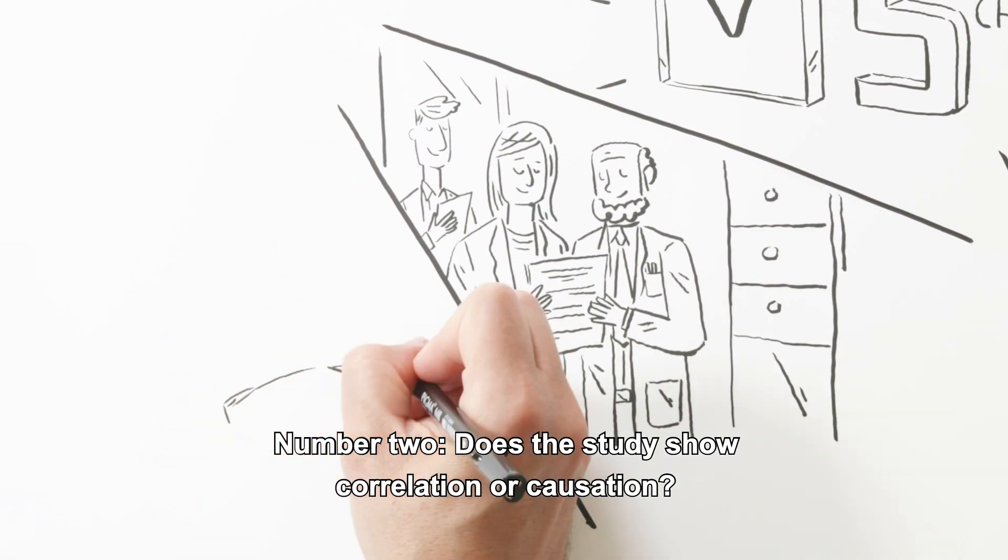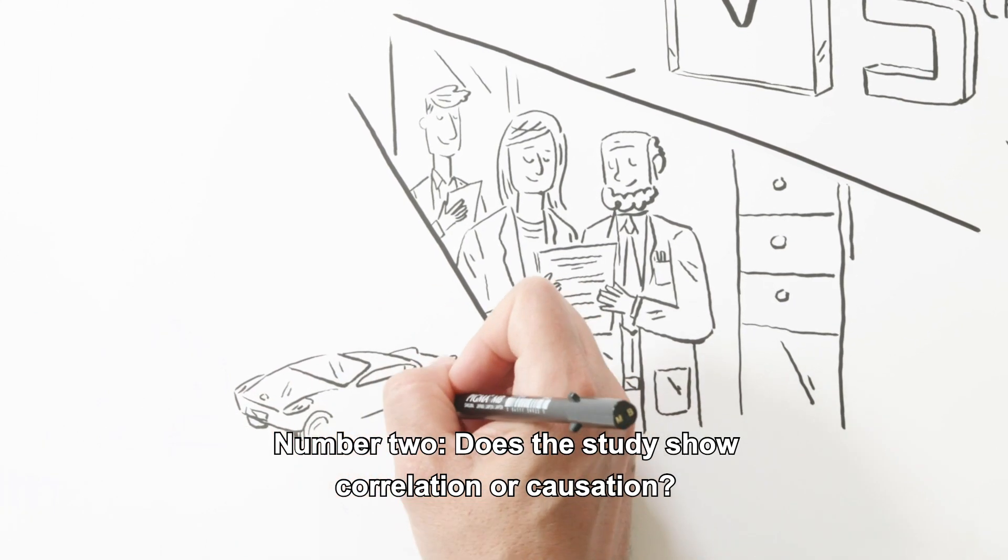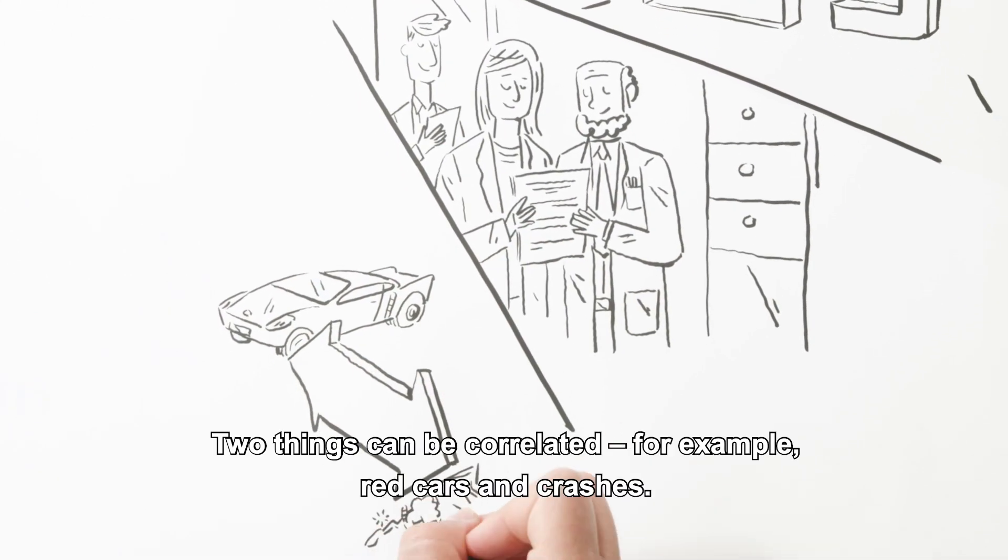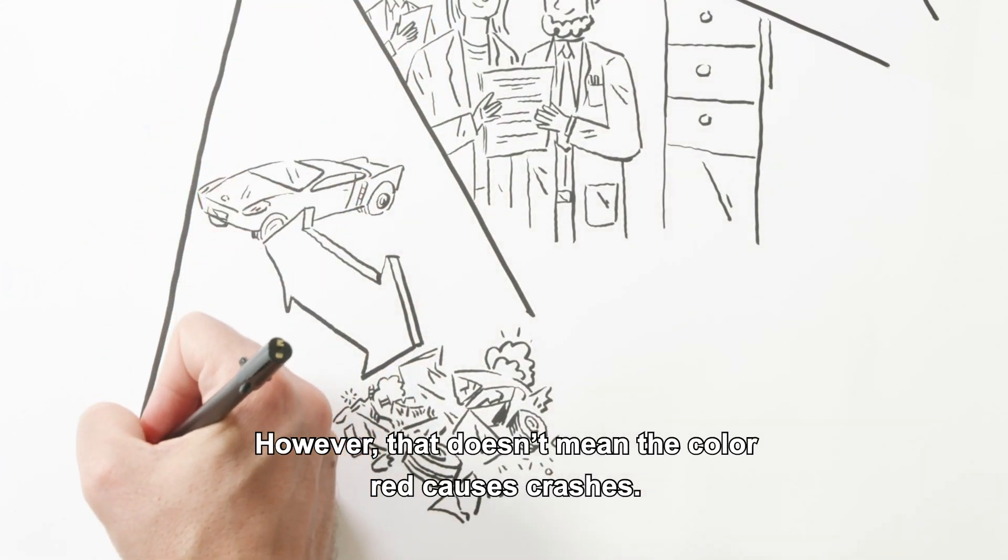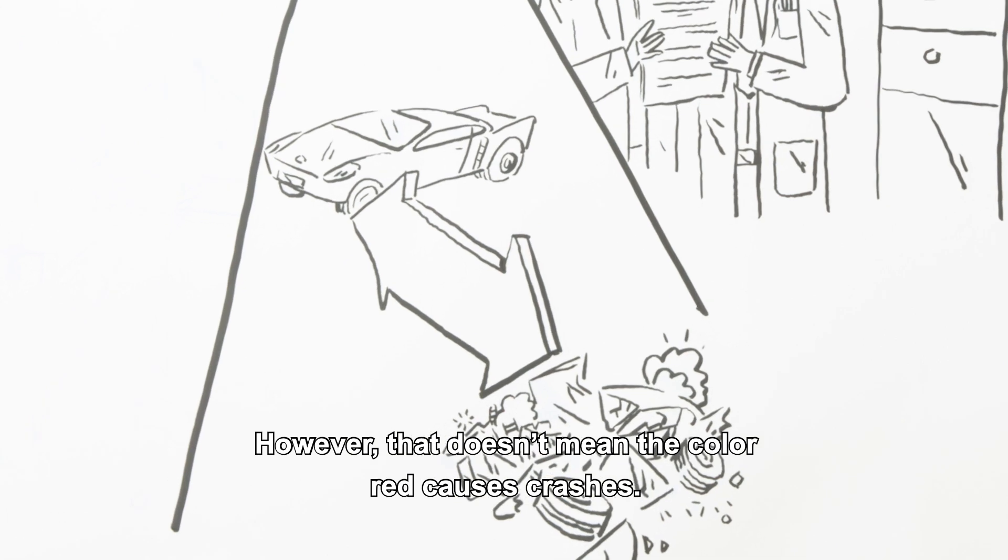Number two: Does the study show correlation or causation? Two things can be correlated, for example, red cars and crashes. However, that doesn't mean the color red causes crashes.